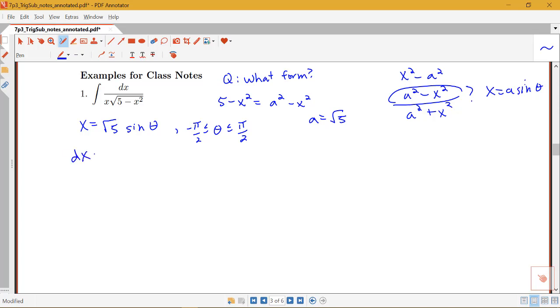So then whenever I'm doing variable substitution, I'm going to have to change from my old variable, which is in terms of x, to my new variable in terms of theta. So I'm going to need something with a d theta instead of a dx, so I need to compute dx. So dx is going to be root 5 cosine theta d theta.